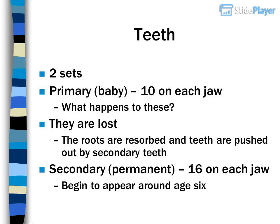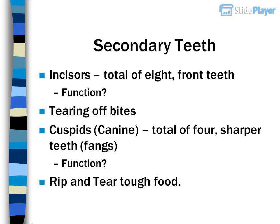Teeth: two sets. Primary, or baby teeth — ten on each jaw. What happens to these? They are lost. The roots are reabsorbed and the teeth are pushed out by secondary teeth. Secondary, or permanent teeth — 16 on each jaw — begin to appear around age 6.